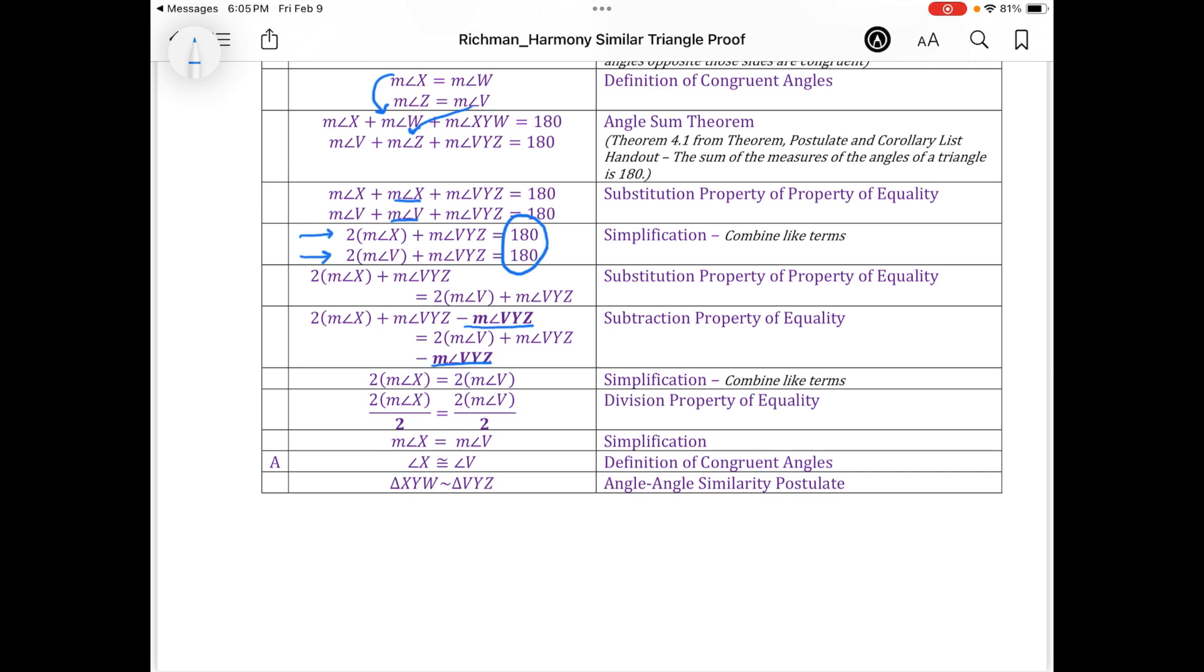Again, using another property of equality, I could divide both sides by two such that they had a common factor to eliminate, leaving me with the measure of angle X equal to the measure of angle V with simplification. And then according to the definition of congruent angles, then angle X is congruent to angle V.